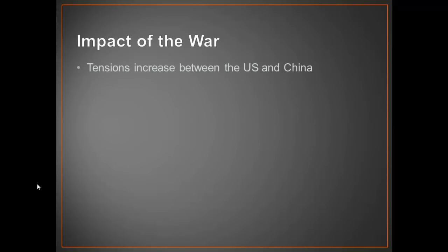Tensions between the United States and China increased drastically, and it would be decades before relations began to improve. Relations began to improve on February 21st, 1972, when Nixon visited China. The Korean War was also the first in a series of long, drawn-out wars that the United States would get involved in.